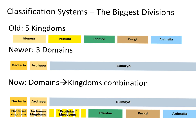Each system has its own strengths and weaknesses. For example, the Five Kingdoms system had distinct categories for plants, animals, and fungi. But it also has weaknesses — namely, that the group Protista is not in fact one kingdom, because there are too many organisms in there that are not related.